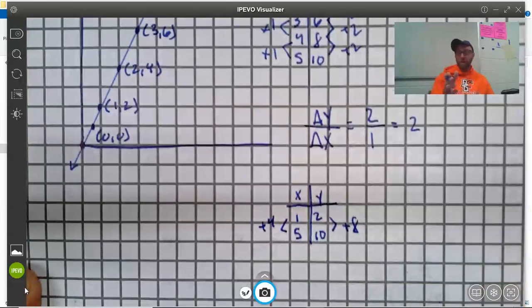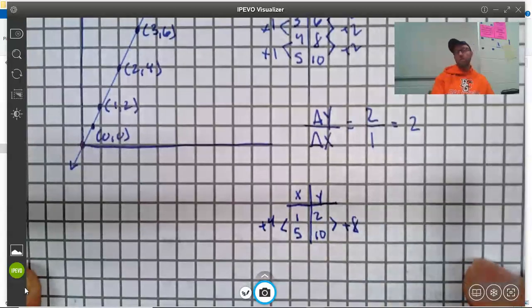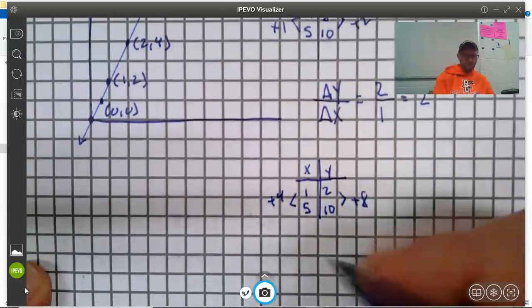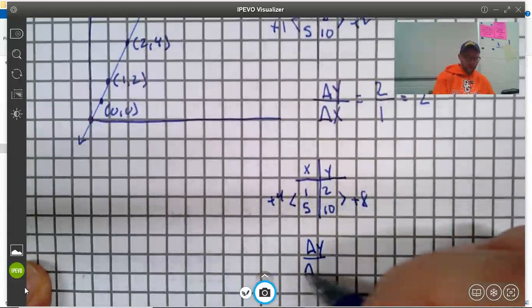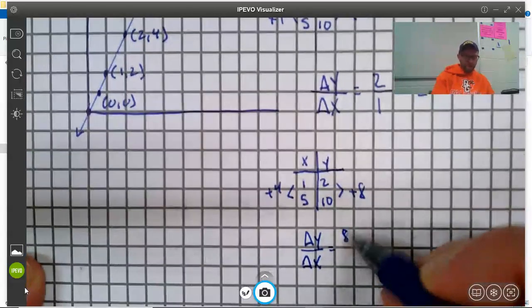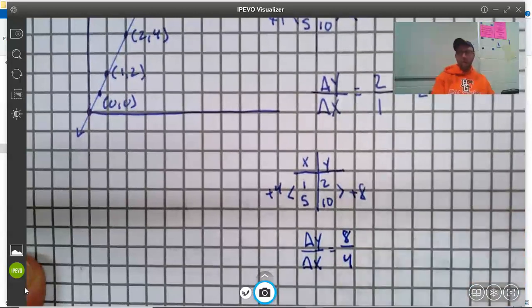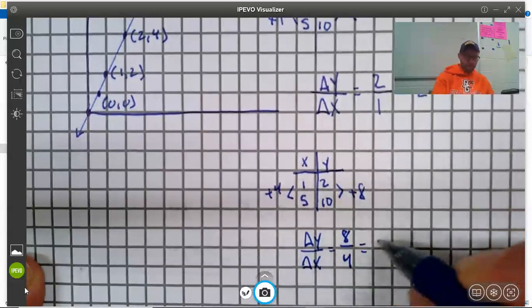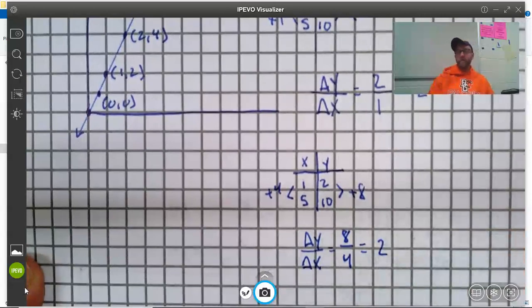And my change in x was plus 4, which, we talked about how to calculate this. 10 minus 2, 5 minus 1. So, then I write it out as a fraction. Change in y over change in x. And it is 8 over 4. But that simplifies to 2. Same as we got before.